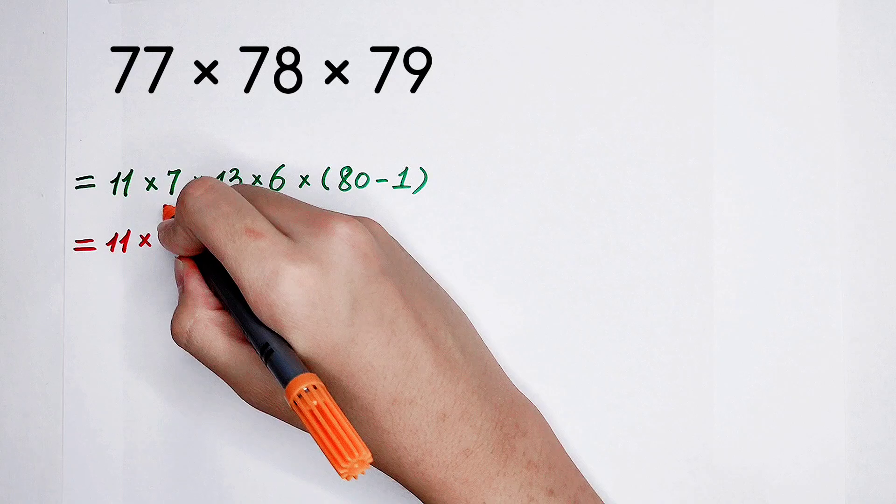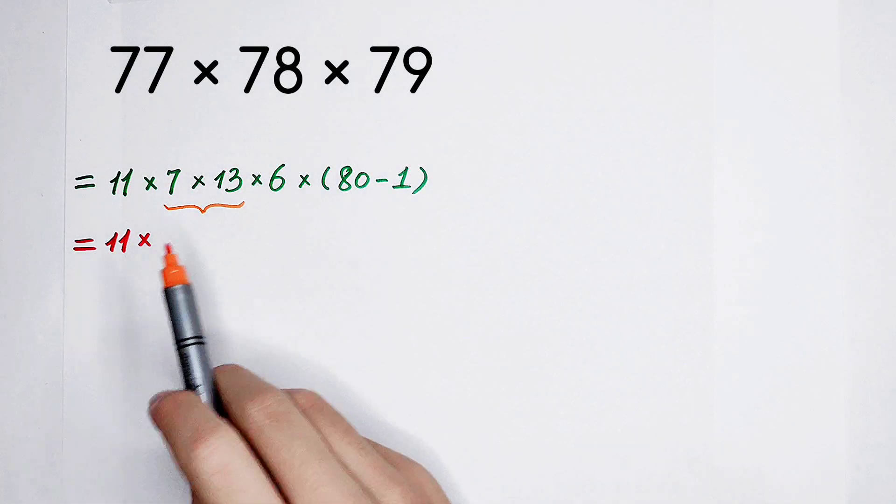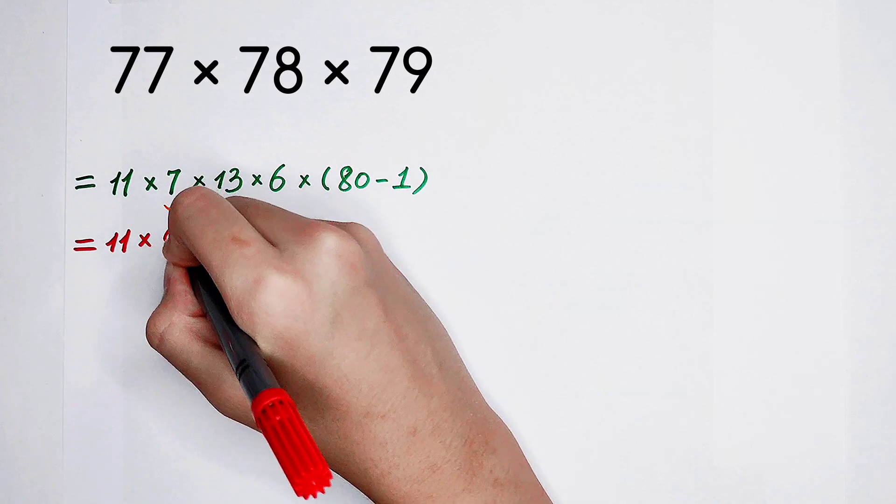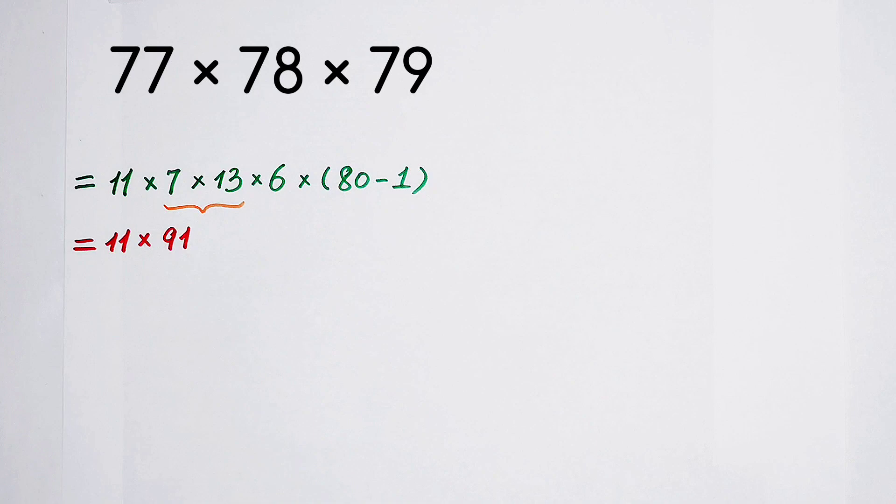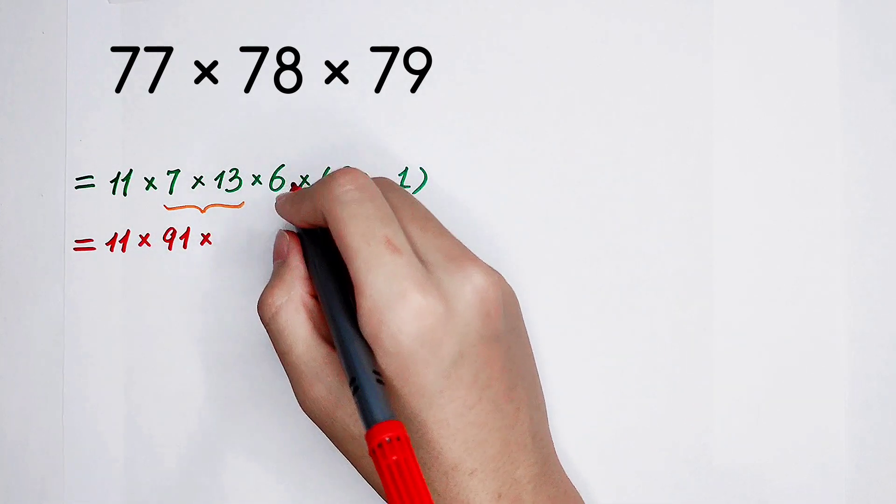And now I would like to let them be together. 7 and 13, let them be together. Here it's 91. Oh, it's not a very good number, is it? Then times 80 minus 1.